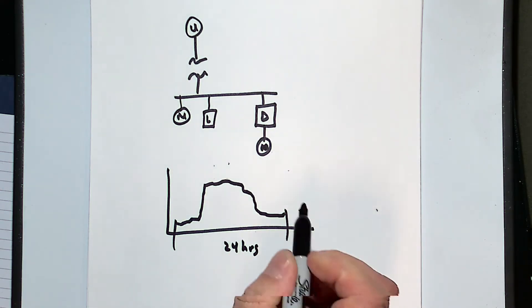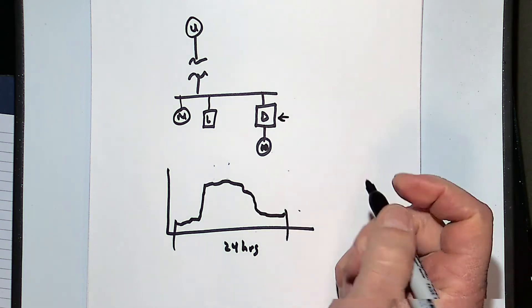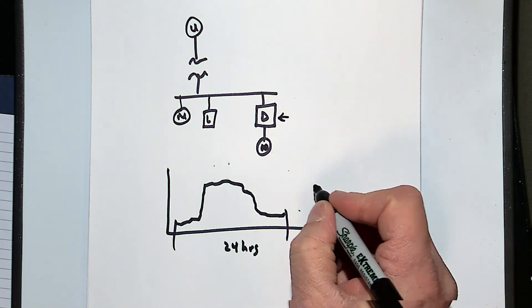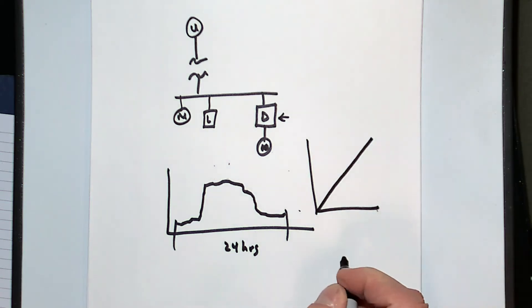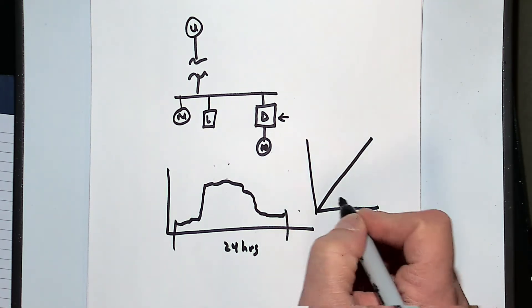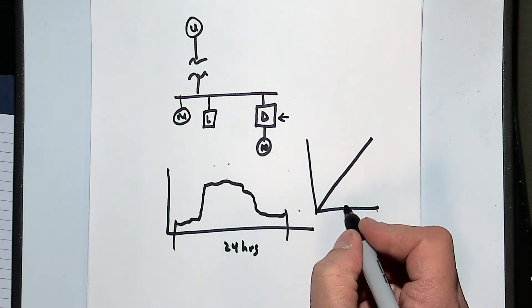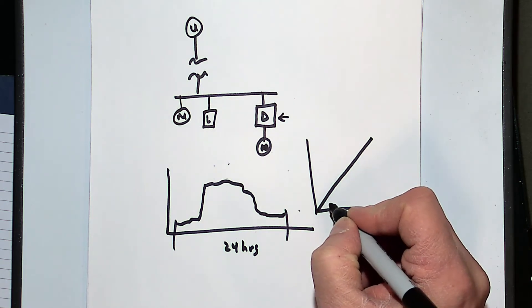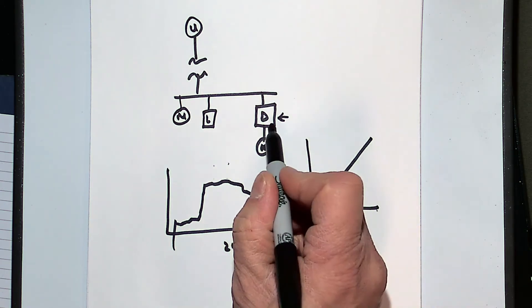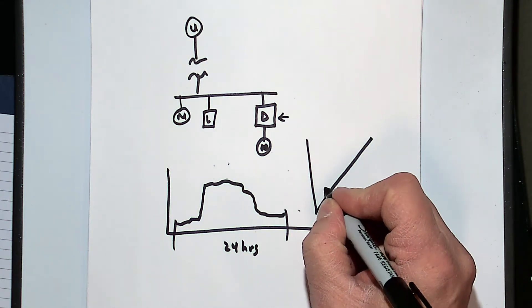But what happens is the 60 hertz current kind of follows that pattern. What's very interesting is the harmonics for VFDs and other loads like that don't really follow that linear progression. So as I add more load, my percent changes like one-to-one. What happens with drives is they're very, very heavily front-end loaded with harmonics.